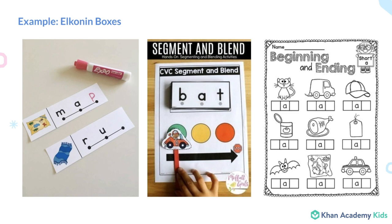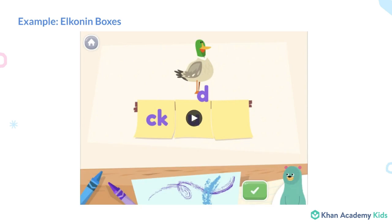Teachers often use a tool called Elkonin boxes to break down the individual phonemes. With technology, we can use real-time visual and audio feedback in our tool to help children understand the letter sounds and how they blend together, even when they don't blend them correctly.